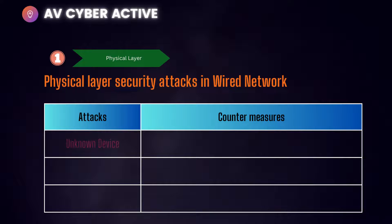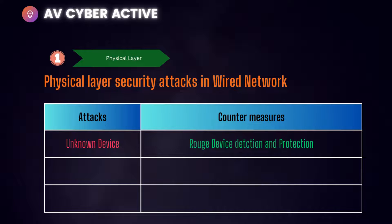Beginning with the first wired attack: unknown hosts. This type of attack happens when an unknown device is placed in your network and you have no way of knowing that it's sniffing your traffic or even present in your network. The countermeasure is applying a rogue device detection or protection mechanism — for example, a policy that blocks any new MAC address detected on your network until it is authorized through a software or hardware solution.